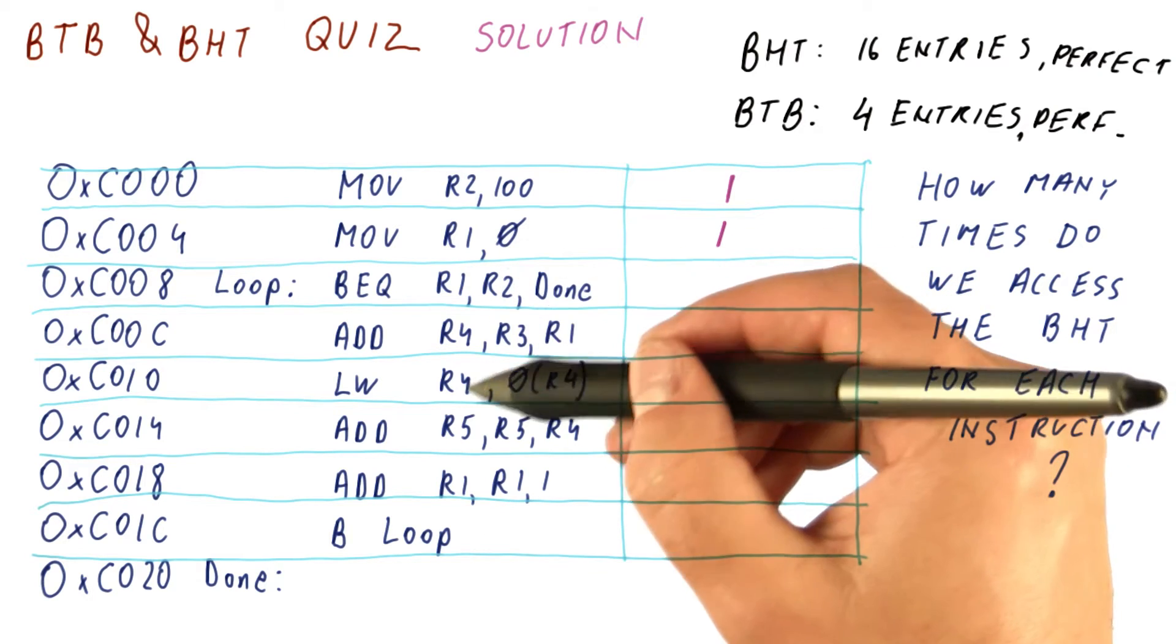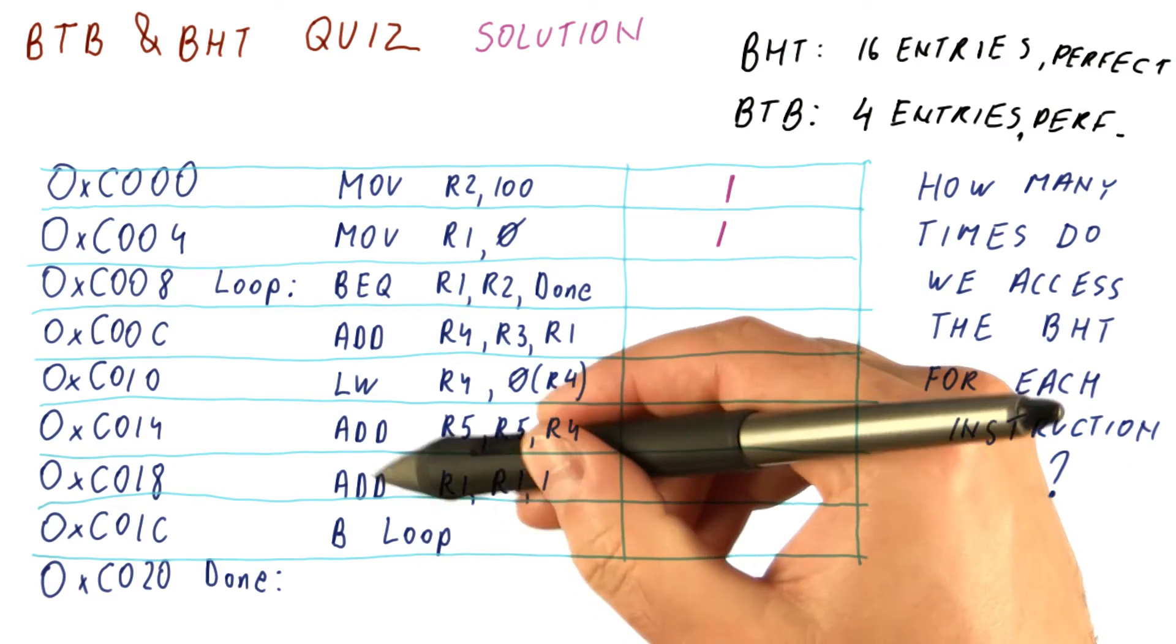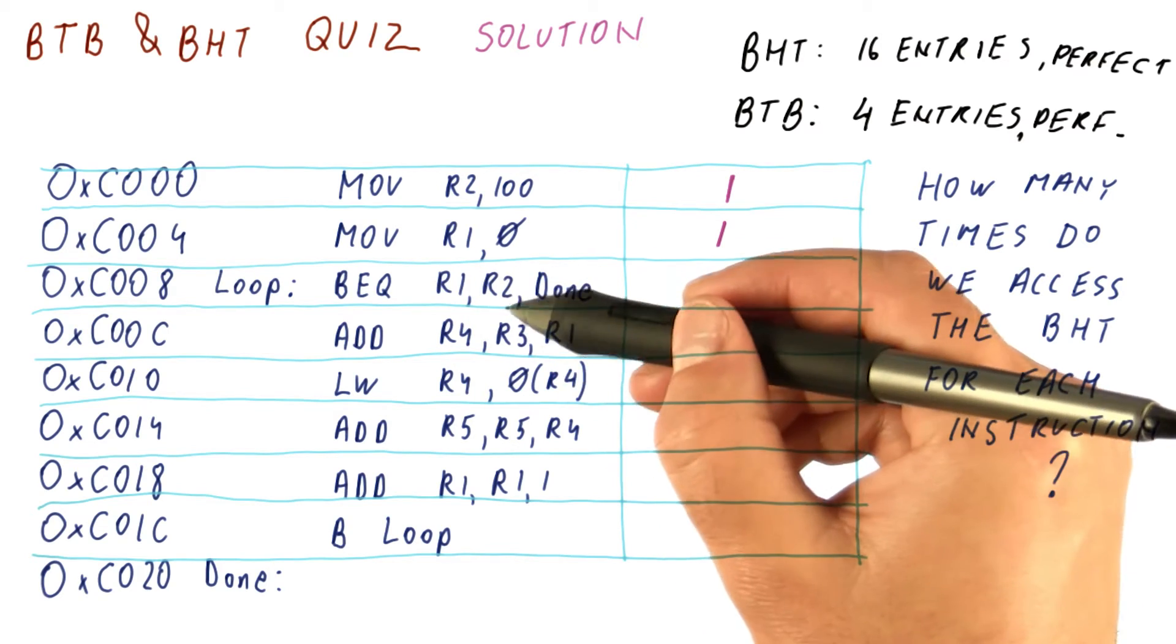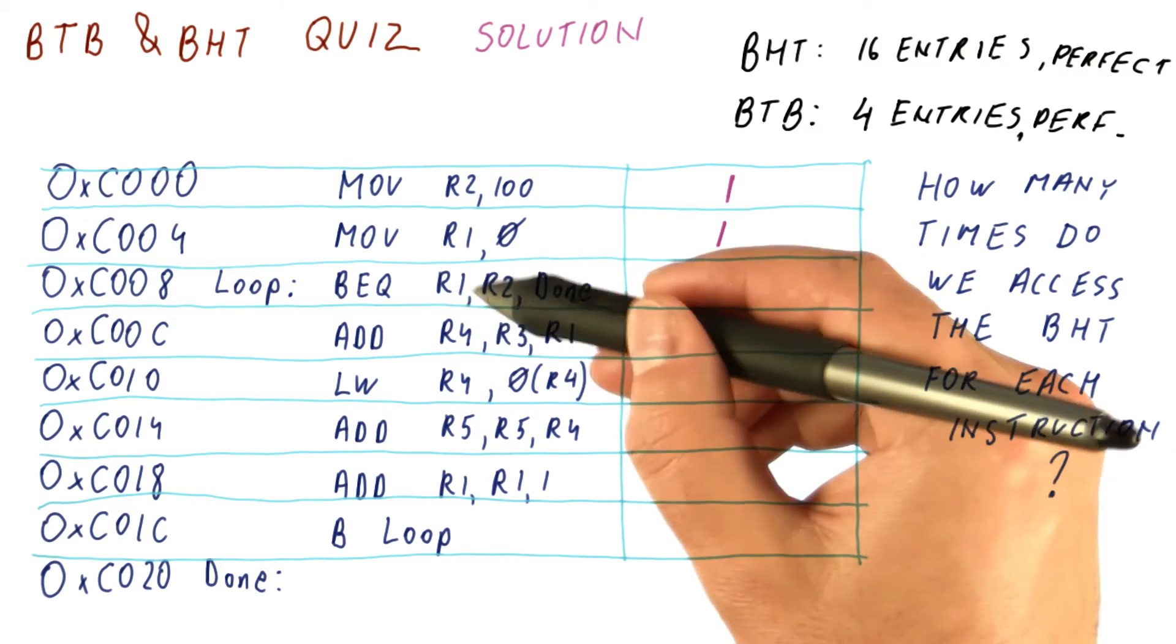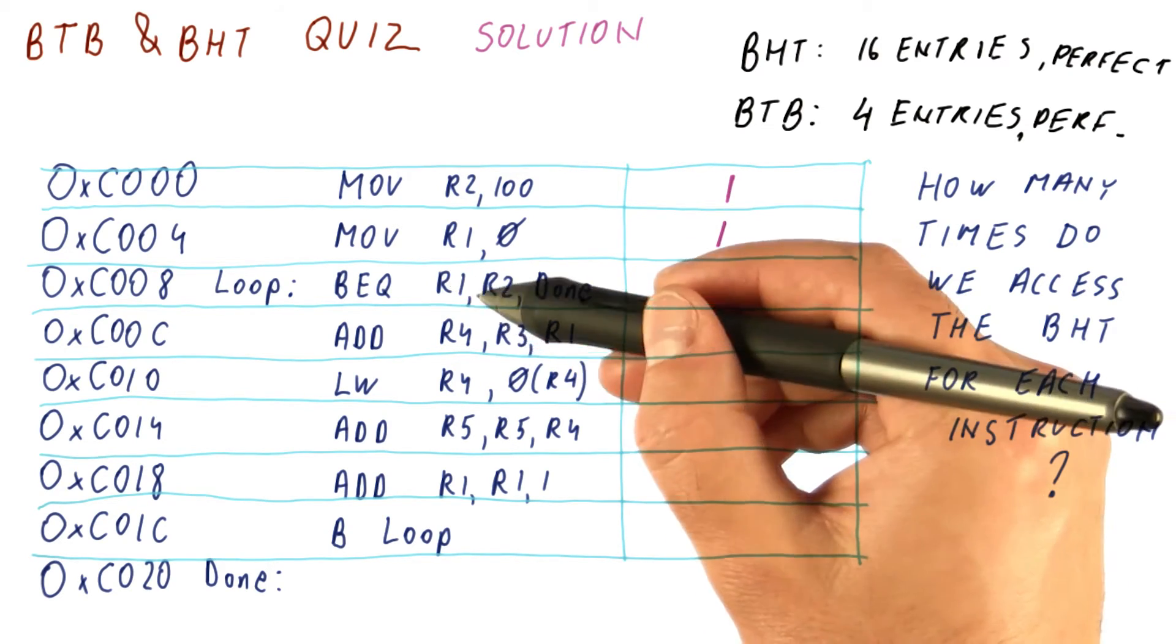The last iteration we do will be with R1 equal 99. And finally, R1 will be incremented. We jump back here, find out that R1 and R2 are now the same because R1 is now 100, and exit the loop.